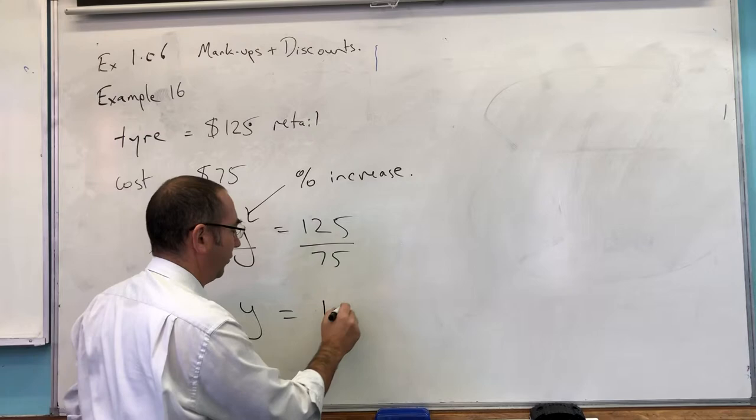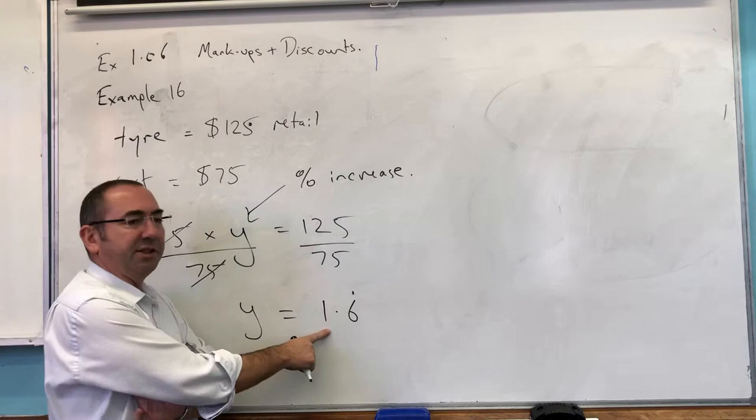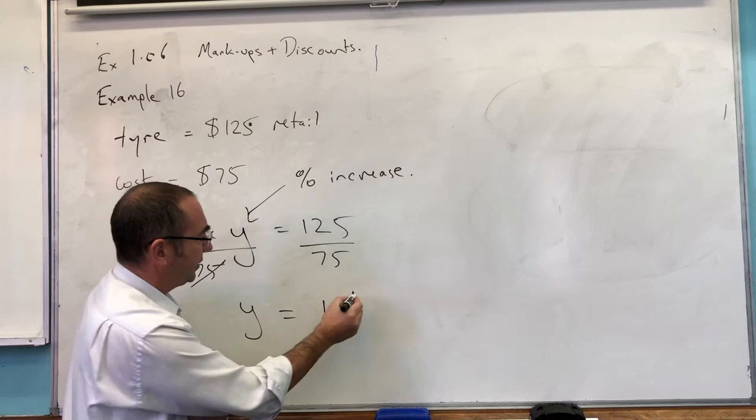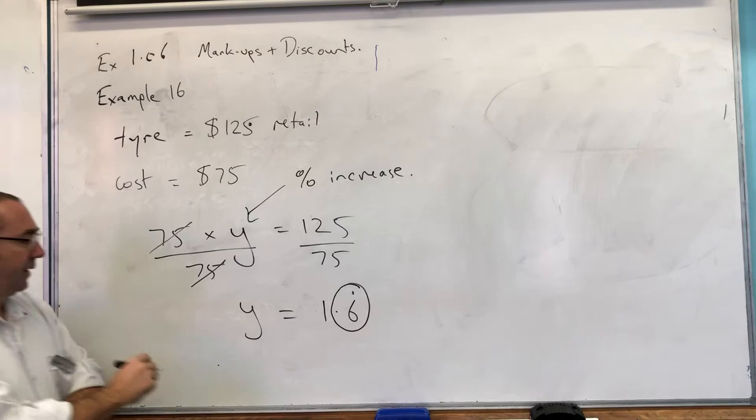Which is coming out at 1.6 recurring. Now, if I multiply something by one, it stays the same. So how much has it gone up by? It's gone up by that amount. So the increase was 66%.